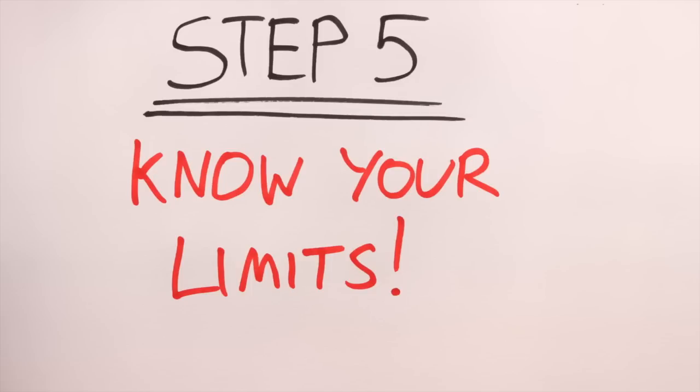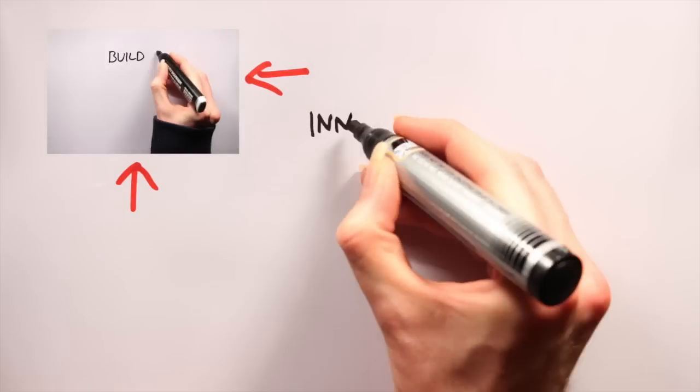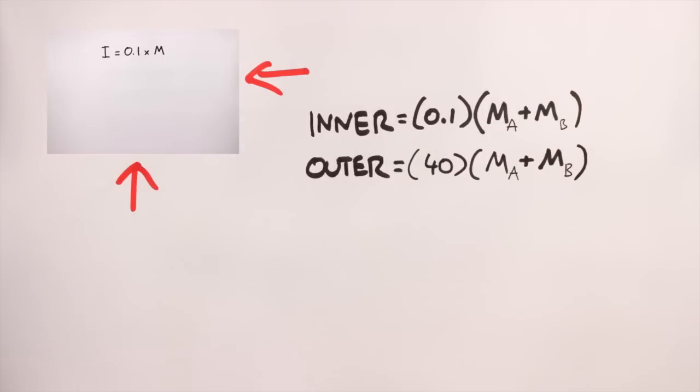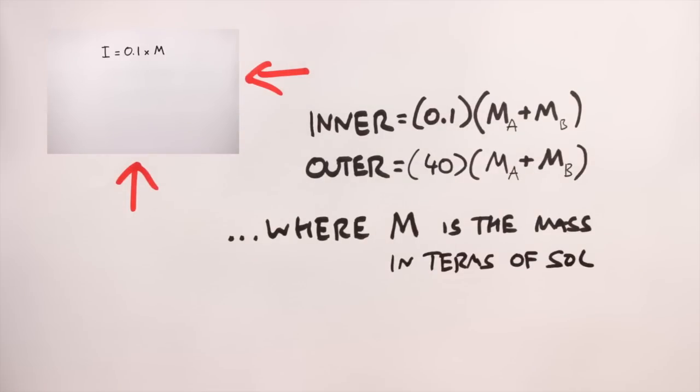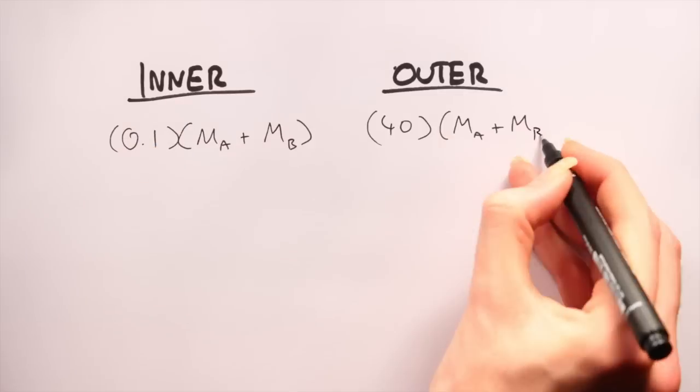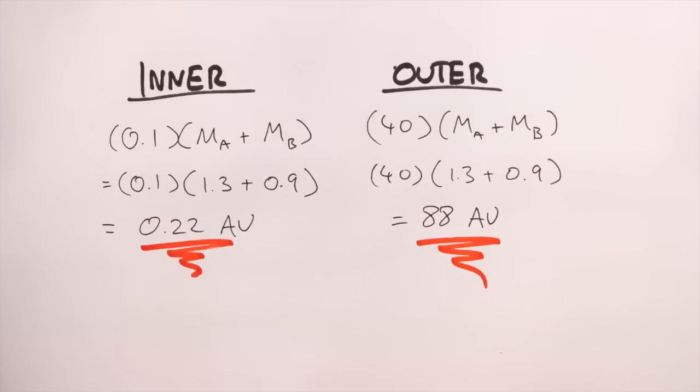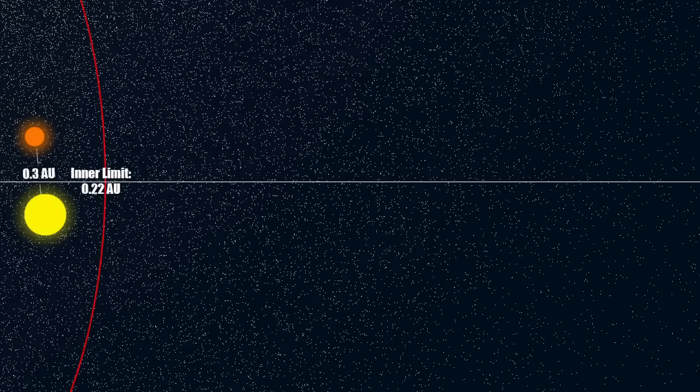Step 5, know your limits. So, like in the previous video, we need to set the inner and outer boundaries of our system to mark out a region of space within which planets can orbit. I've adapted the equations I used last time to account for the extra mass the companion star brings to the table. Do the math, and the inner limit of the Mikkel system is at 0.22 AU, and the outer is at 88 AU.